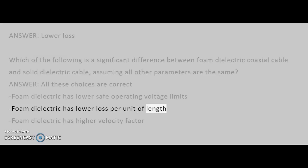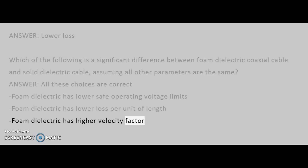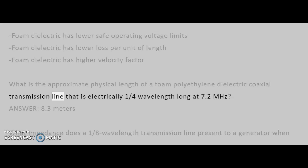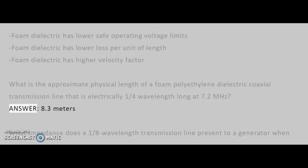Answer: All these choices are correct — foam dielectric has lower safe operating voltage limits, foam dielectric has lower loss per unit of length, and foam dielectric has higher velocity factor. What is the approximate physical length of a foam polyethylene dielectric coaxial transmission line that is electrically one-quarter wavelength long at 7.2 MHz? Answer: 8.3 meters.